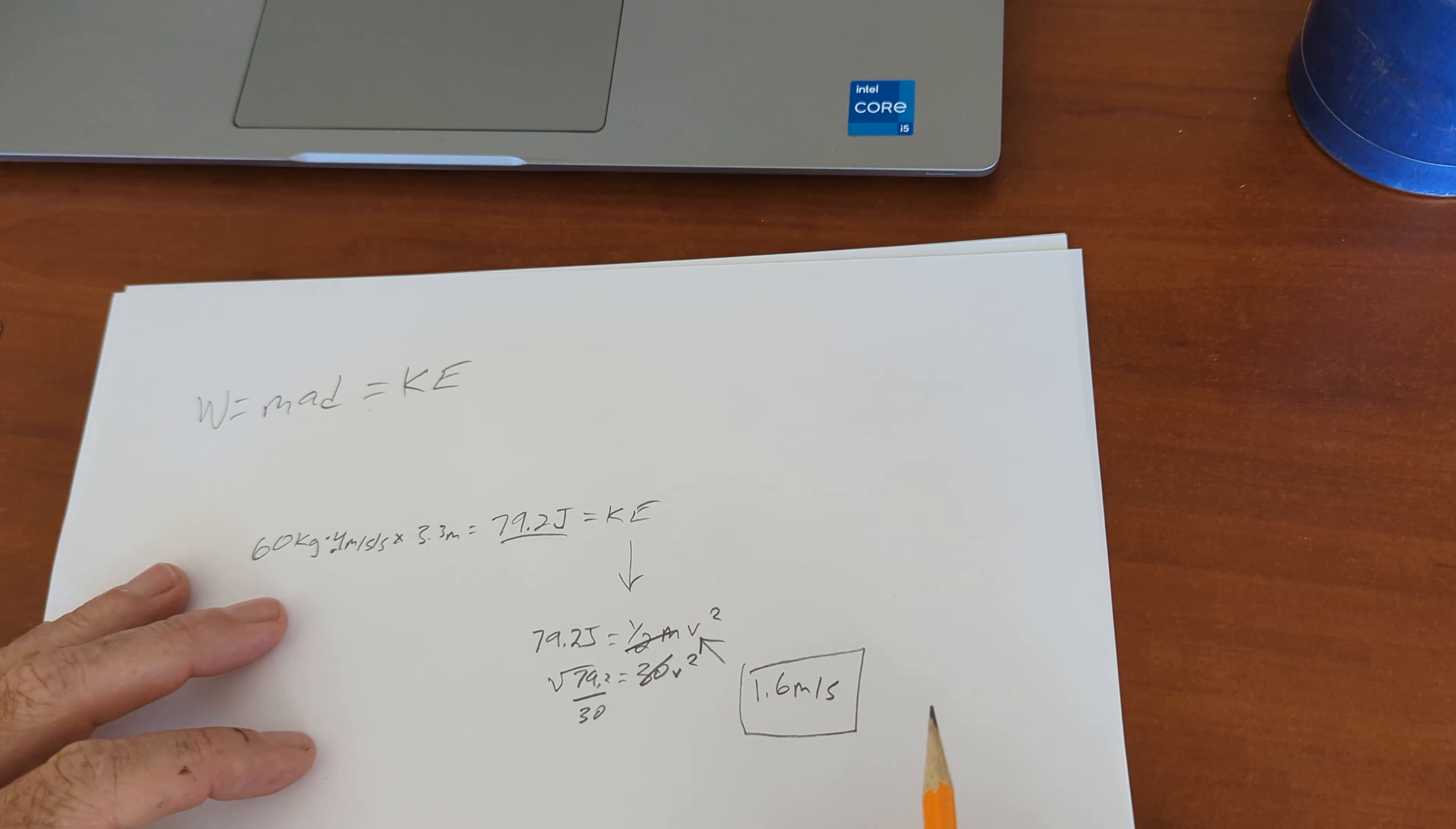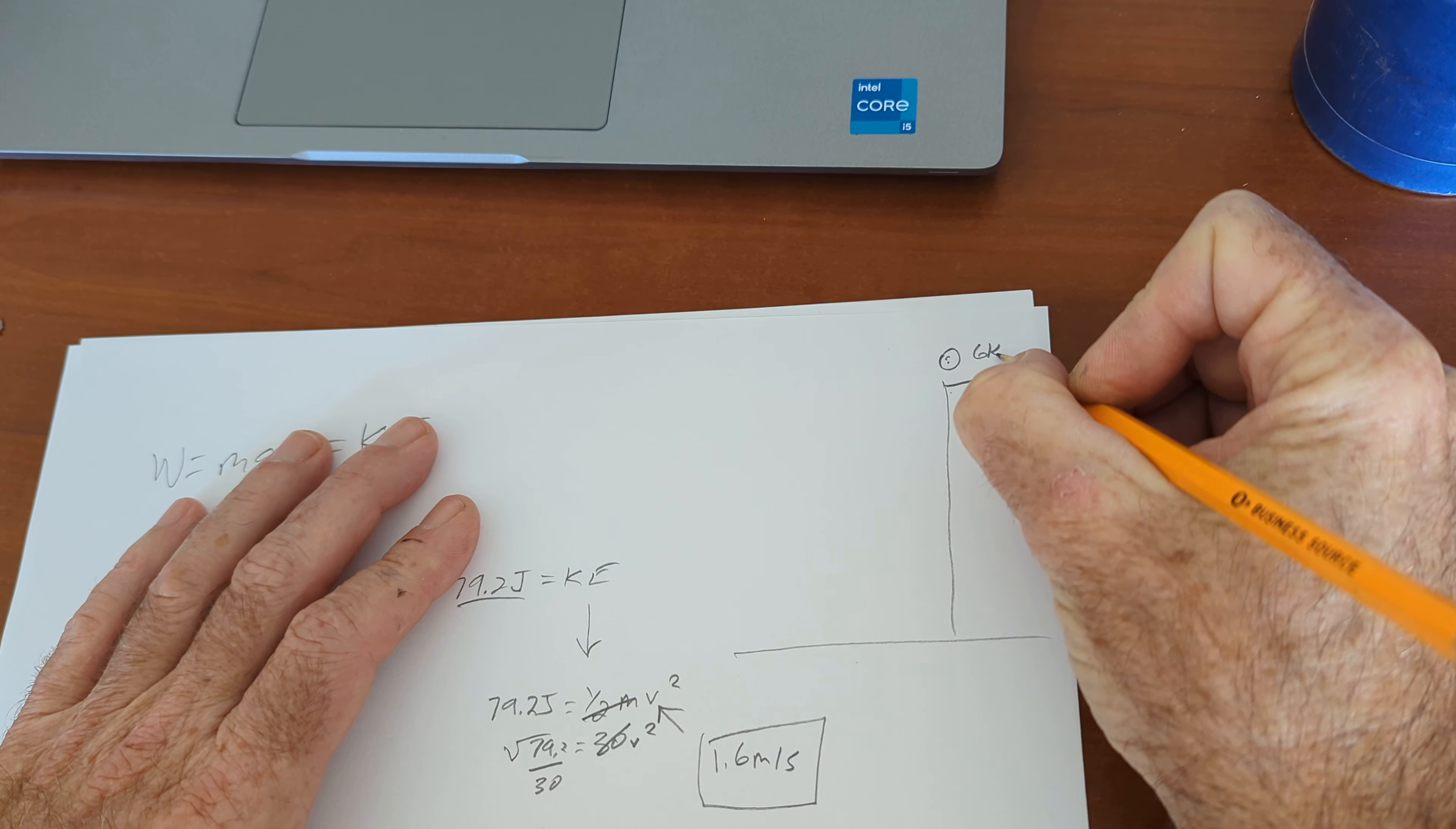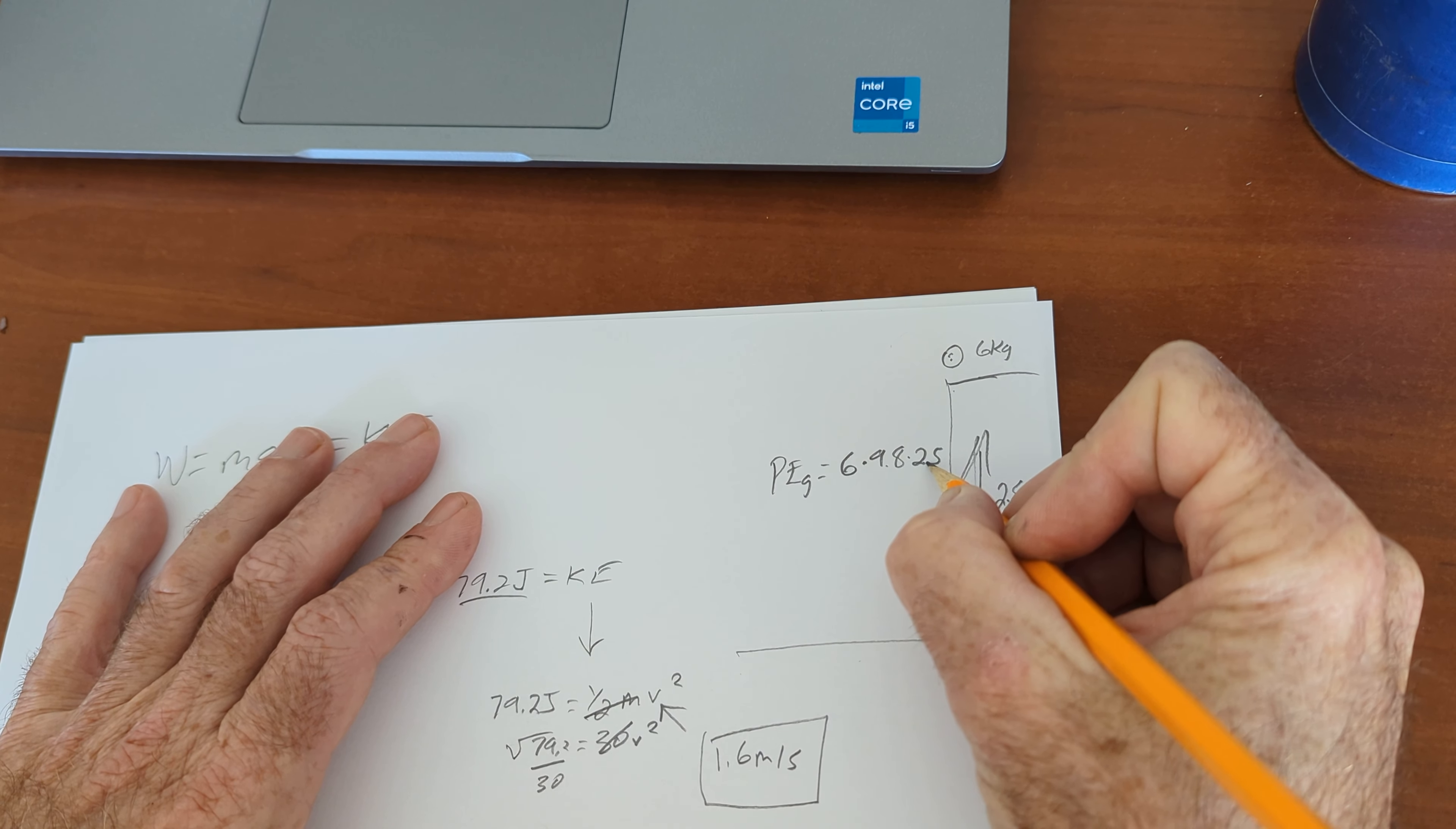Number eight is about a shelf. It says somebody puts a six kilogram bowling ball on a 2.5 meter shelf. So here it is. Six kilograms. And the height of the shelf is 2.5 meters. So it says how much potential energy is stored. Potential energy due to gravity is equal to mass times gravity times height.